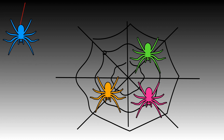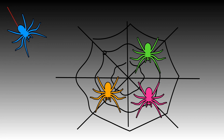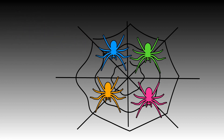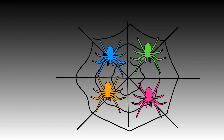Three spiders are in the spider's web. One more spider arrives. How many spiders are there all together in the web? Show me with your fingers again. One, two, three, four. There are four spiders in the web. Three and one more is equal to four.